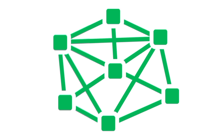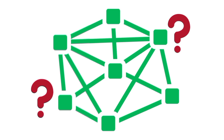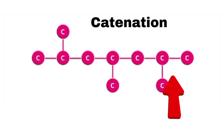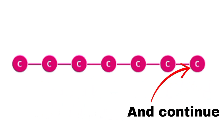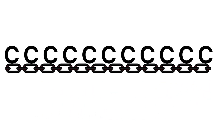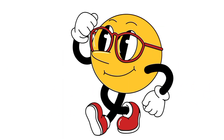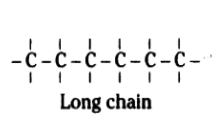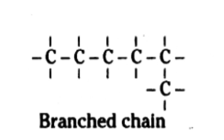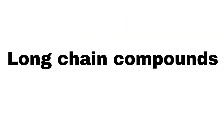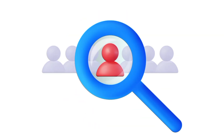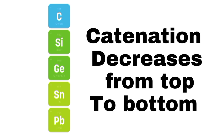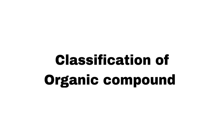Organic compounds are mostly complex and have large molecular structures. This is due to the fact that carbon has a unique ability to form long-chain compounds, and this is known as catenation. Catenation is the ability of carbon to form long-chain compounds, which is unique, and no other atom can form such long-chain compounds.